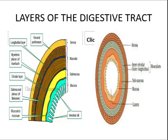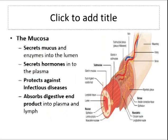We'll now look at the layers of the digestive tract. The digestive tract runs from the oesophagus to the anal canal. The wall of the digestive tract has the same basic four-layer arrangement: the mucosa, submucosa, muscularis externa, and serosa or adventitia. The mucosa is the innermost layer and lines the lumen. Its functions include secretion of mucus and enzymes into the tract lumen, secretion of hormones into plasma, and protection against infectious diseases.